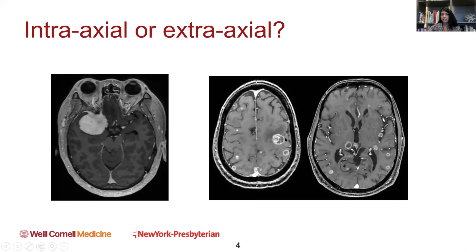In contrast, this is very typical of a metastatic tumor. Metastatic tumors are typically intraaxial tumors that arise often at what we call the gray-white junction, which is where the gray matter meets the white matter. We call those intraaxial tumors because they are actually arising from within the brain itself, as opposed to outside the brain and pushing in.